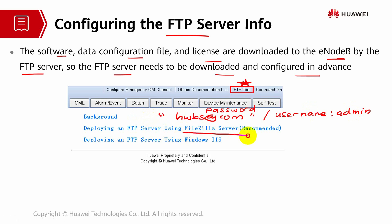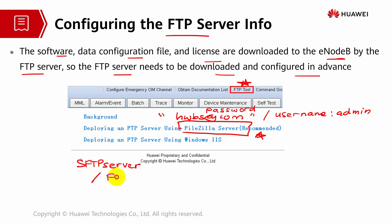FileZilla is also another example which is recommended, but we have to check whether the UMPT can be supported by FileZilla or not, because some versions will have difficulty with FileZilla. We have to see the compatibility of the UMPT card itself. Some UMPT versions are compatible with the SFTP server, and some are compatible with FileZilla. We have to see which is more suitable based on the version type — that depends on the UMPT itself.